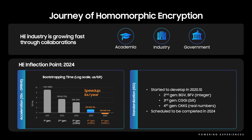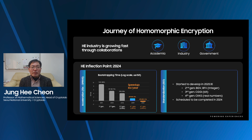The data is stored in an encrypted safe and processed without decryption. The safe is never opened while being processed — only the result is decrypted. FHE industry is growing fast through collaborations with academia, industry, and government. As a result, the performance of FHE has been accelerated almost 8 times every year for the past 10 years. In addition, ISO standardization will be completed in 2024, so I believe that the FHE market inflection point will be 2024.